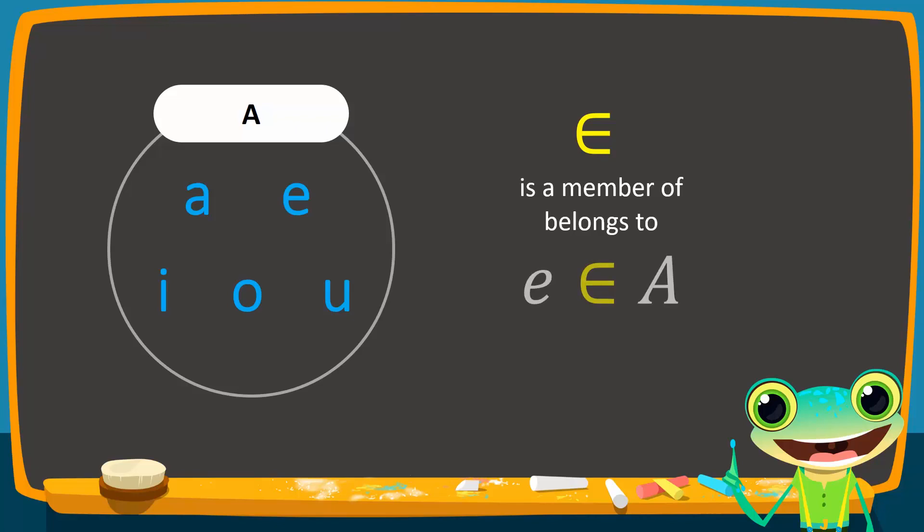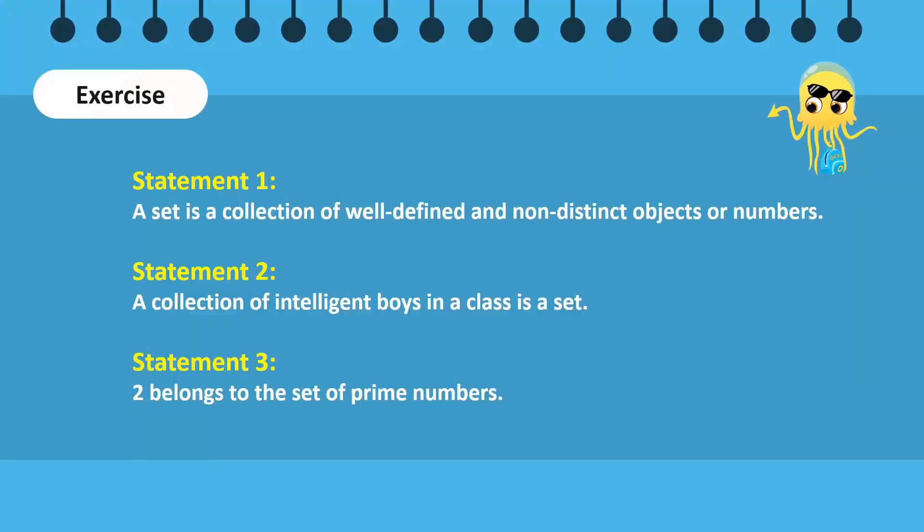If an element does not belong to a set, we simply use the same symbol but cross it out. For instance, we say that element f does not belong to set A. Let us do a quick exercise. Study these statements. Which are correct and which are incorrect? Take a minute to think and discuss with your friends.